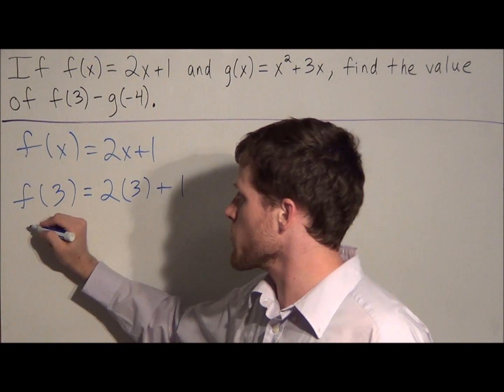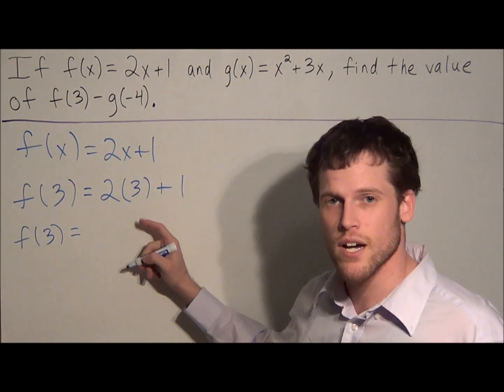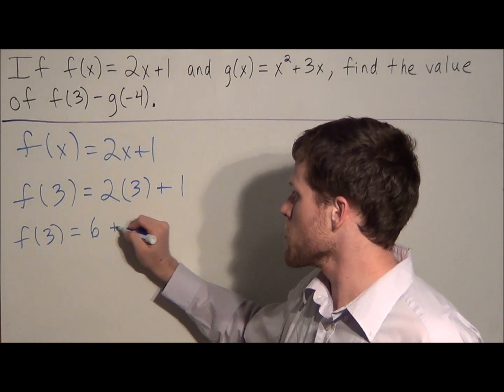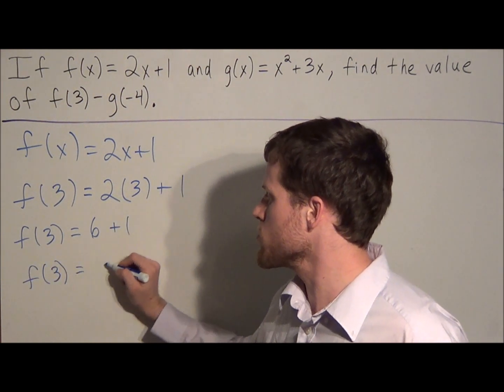For the next line, we have f of 3 is equal to, and we have 2 times 3 is 6, plus 1. So the value of f at 3 is equal to 7.